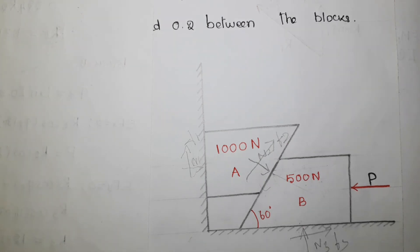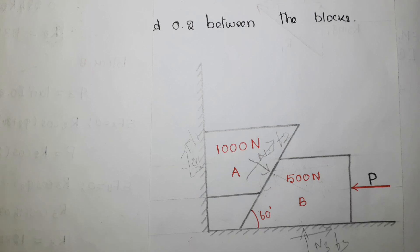There are five important steps we followed: first, understanding the given problem very well; second, drawing the correct free body diagram; third, using the appropriate equation; fourth, doing the calculation very carefully; and fifth, validating the answer. These are the five steps we followed. We will meet in the next video very soon. Thank you.